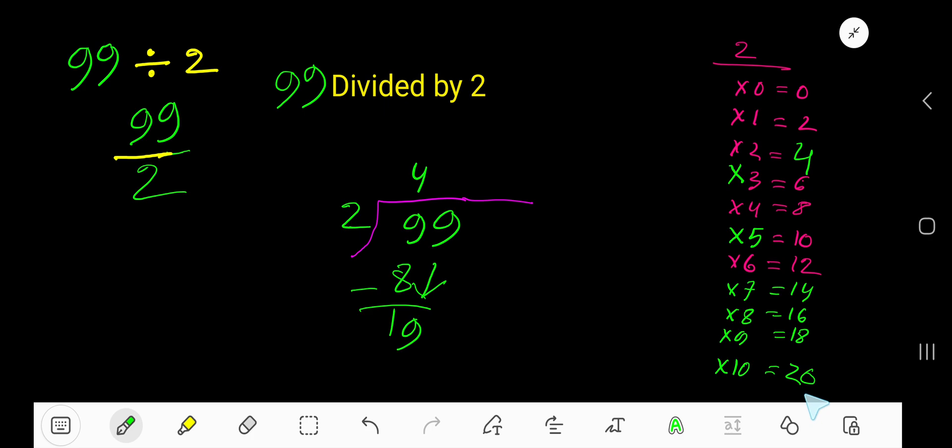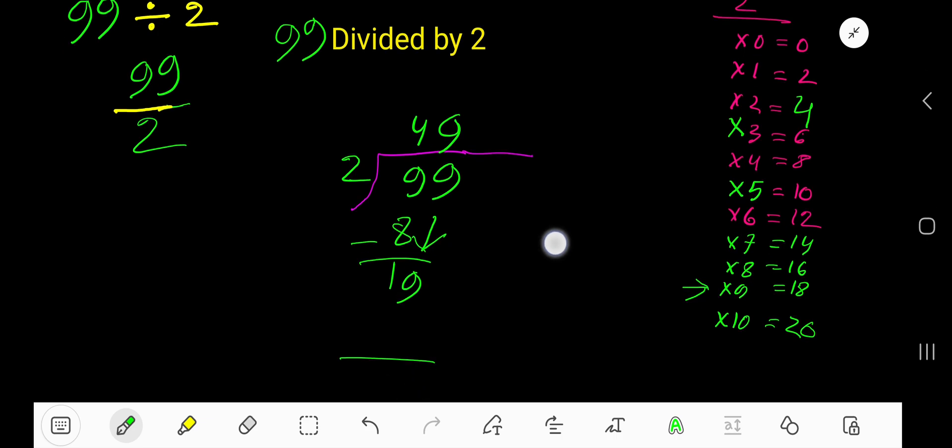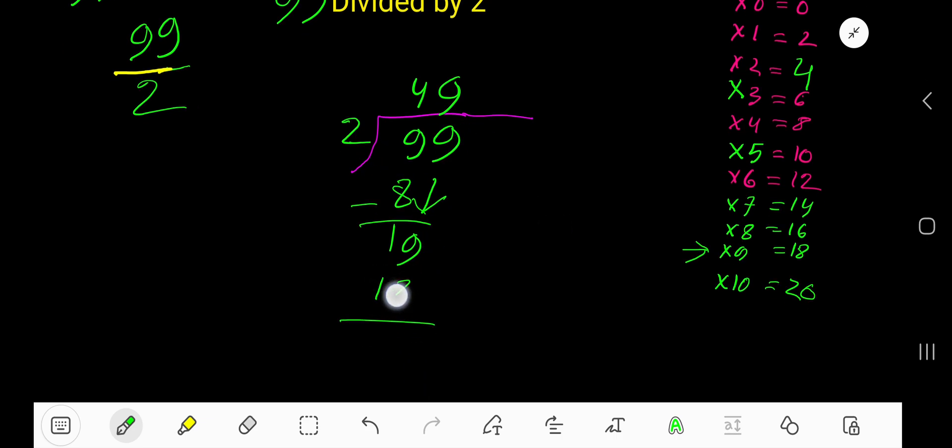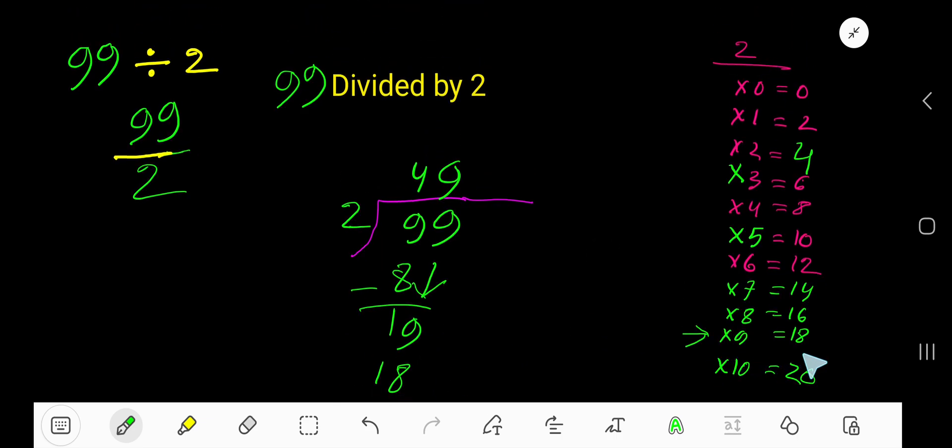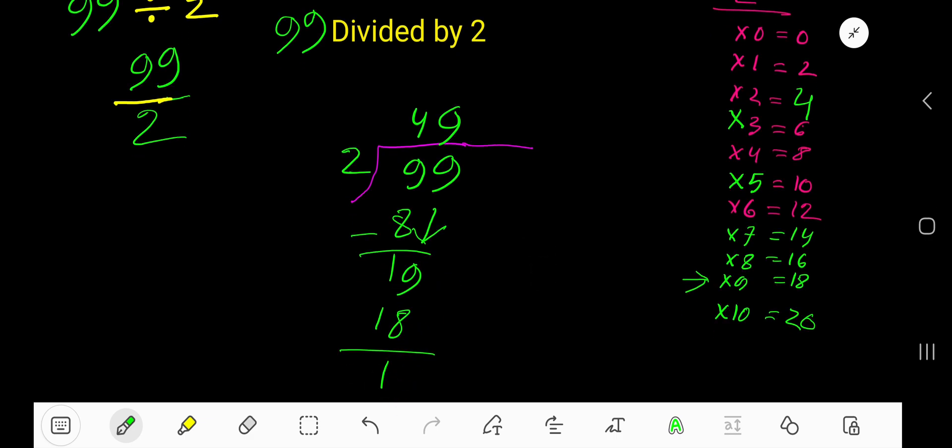2 times 10 is 20 which is greater. 2 times 9 is 18. Take here 9. 2 times 9 is 18. So your answer is 49 remainder 1.